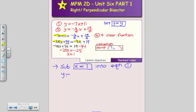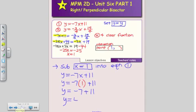Y is equal to negative 7X plus 11. Y is equal to negative 7 times 1 plus 11. Y is equal to negative 7 plus 11, gives me a value, Y is equal to 4. So my circumcenter, my intersection point is 1 and 4.